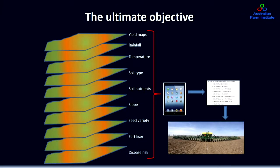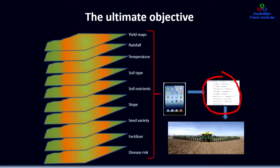The ultimate objective of a lot of these systems, particularly in intensive cropping like the US, is to integrate all elements of information — yield maps, rainfall, temperature, soil type — through a platform, utilising an algorithm, to come up with an optimum solution for things like what variable rate, what variety, and what fertiliser application to use for the next crop. A critical competitive element in these systems is the algorithm — the formula used to convert variable information into something actionable from a management decision perspective.